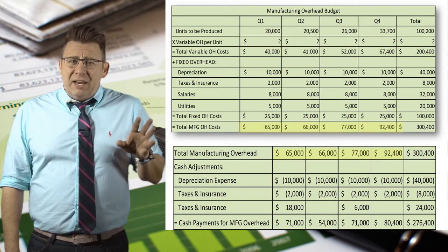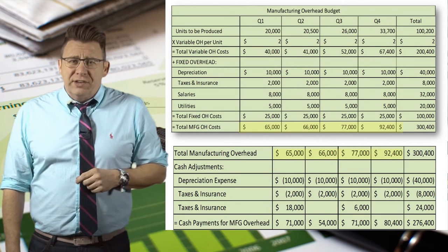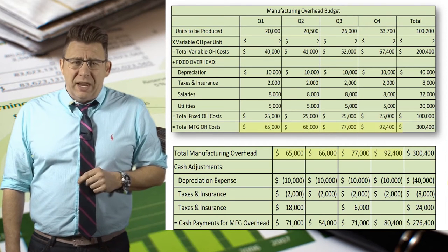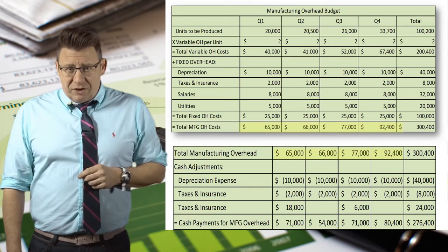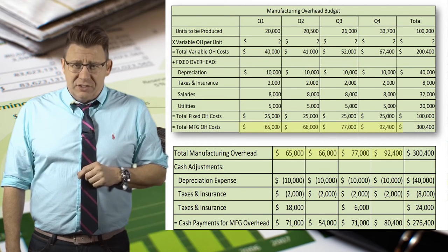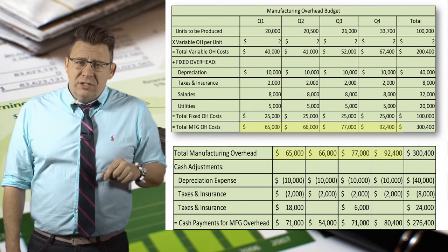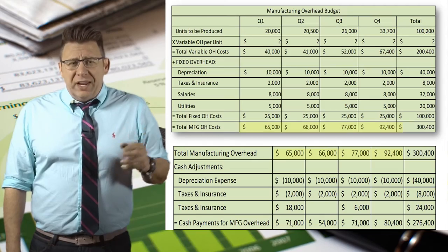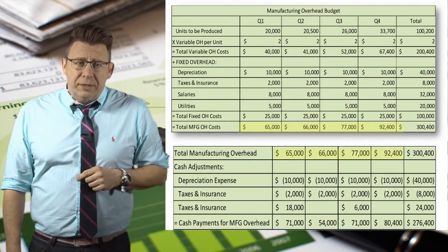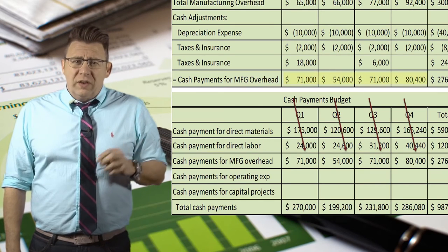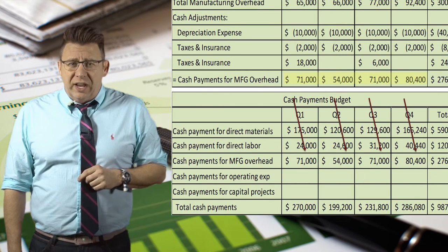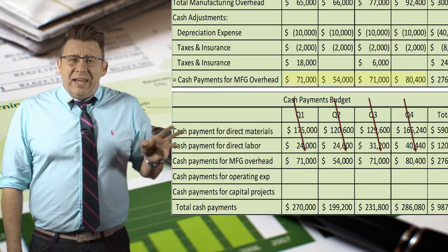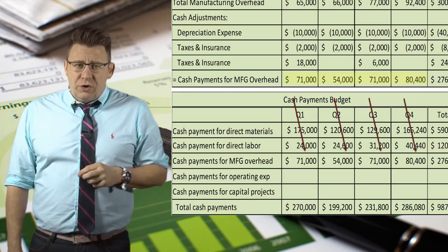Additionally, I've added back the quarterly taxes and insurance expense, since that doesn't match the timing of when these amounts will be paid. Finally, I've shown the cash payments for prepaid taxes and insurance, which I have assumed happened as follows: prepaid taxes, $18,000 in Q1; prepaid insurance, $6,000 in Q3. Then we can total the cash payments for manufacturing overhead and list that on the cash payment budget. In my example, let's assume that all payments are made in the quarter incurred.